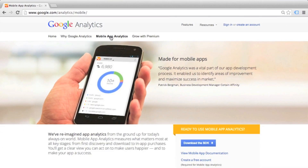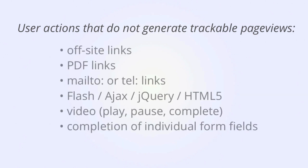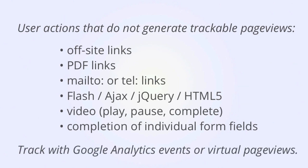However, there are many types of user interactions that don't force a new URL to appear, that don't force the page to reload, and therefore by default don't send data back to Google Analytics. What types of user actions don't generate trackable page views? Links to other websites, links to PDF documents, mail to links, or tel links on smartphones, Flash or Ajax types of interactions, video, and even completion of individual form fields. None of these interactions causes a page load on your site, and therefore none of them can generate Google Analytics data for you.